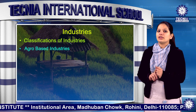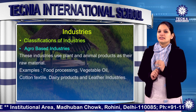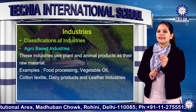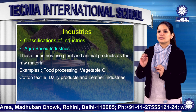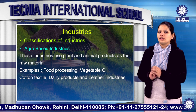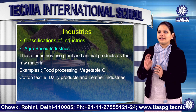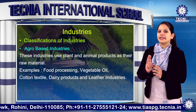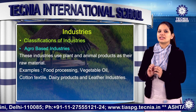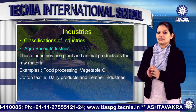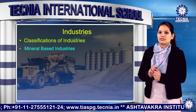Now let's talk about agro-based industries. These industries use plant and animal based products as their raw material. Food processing, vegetable oil, cotton textile, dairy products and leather industries are examples of agro-based industries.